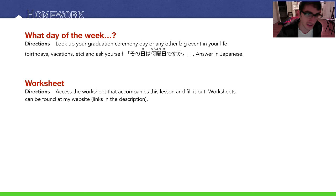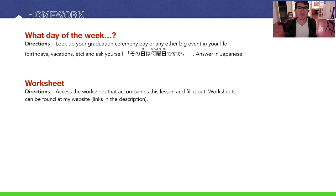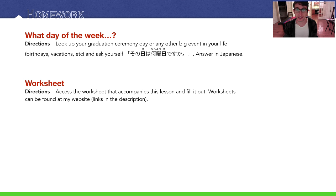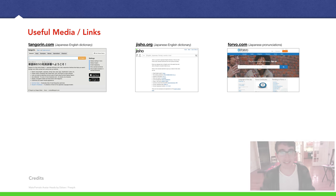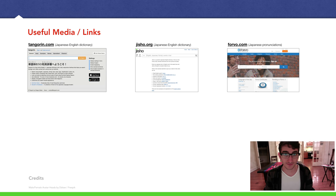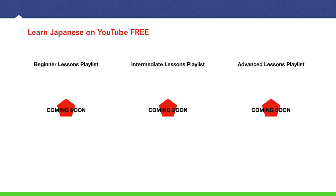Your homework for this lecture: look up your graduation ceremony day, or any other big event in your life — birthdays, vacations, and ask yourself 'Sono hi wa nanyobi desu ka?' and answer in Japanese. There's always a worksheet for every lesson — go to my website, download it and fill it out, link in the description. I've noticed the worksheets have had small font, so from now on I'll make them larger and easier to read. Thanks for watching, and I'll see you in another lecture — bye!